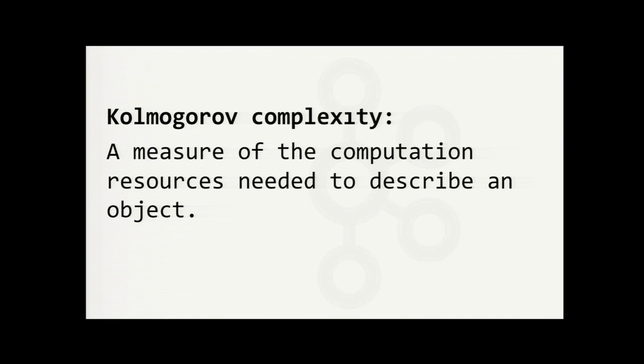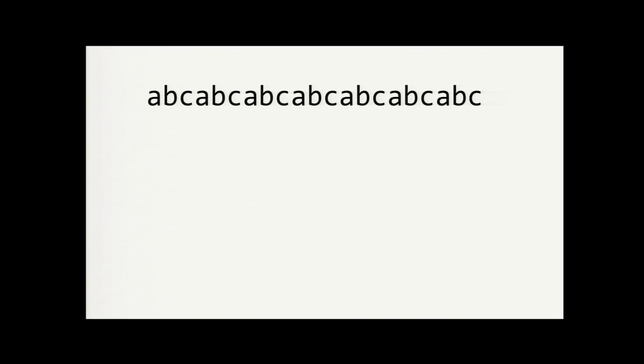There's something in information theory called Kolmogorov complexity. And this is a measure of the computation resources that are needed to describe an object. So, consider this string of text. It contains 21 characters, but it's just ABC repeated seven times. You can see that.